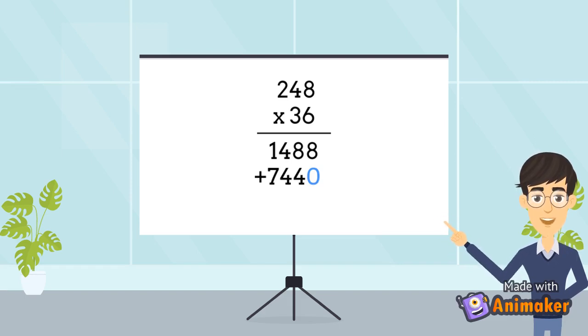Now, we add the two numbers, one, four, eight, eight, and seven, four, four, zero, to get the result, that is eight, nine, two, eight. So, two hundred forty-eight multiplied by thirty-six is eight, nine, two, eight.